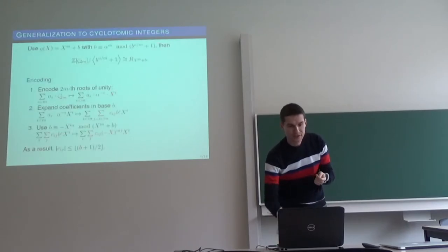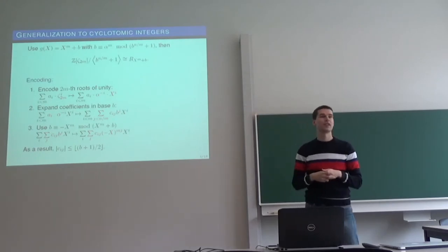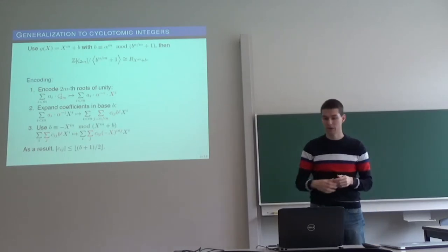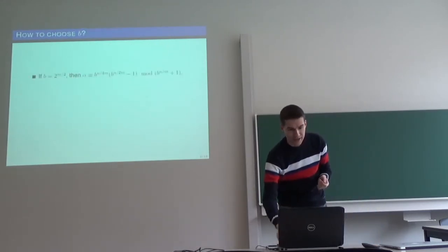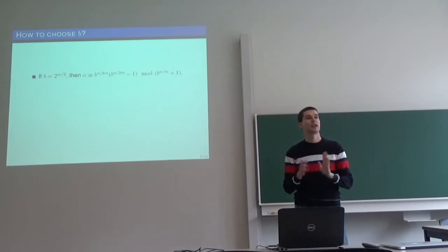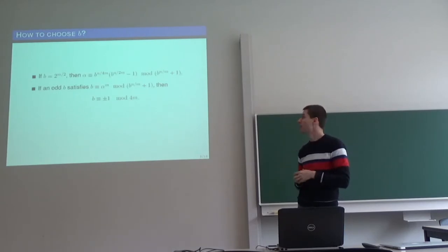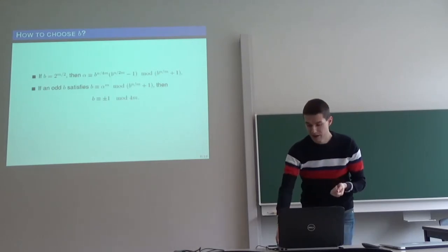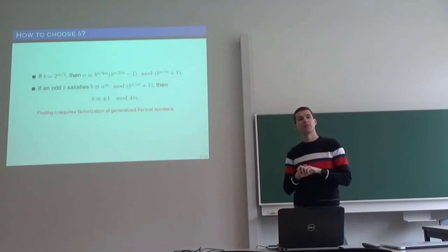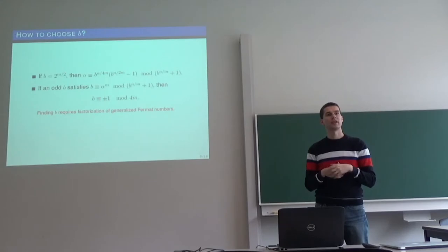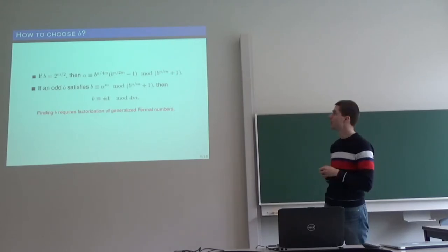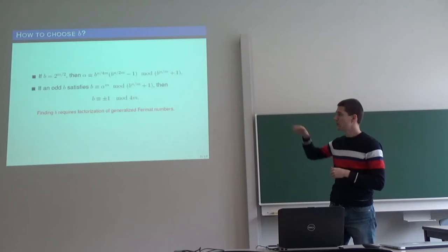So we have this pretty strict assumption about b, that b must be n-th power of some number, modulo b^(n/φ(n)) plus 1. But we can take b of this form and essentially we have already a nice formula for alpha, for the n-th root of b in this case. If you want to take b odd, then we have only this condition, which is pretty strict if m is big enough. And in general, actually, if you want to find really optimal b, because the noise growth of our messages depends on b, and also the encoding correctness depends on b, we need to factorize generalized Fermat numbers. This is why we kind of stick with the first case, with the first choice of b.